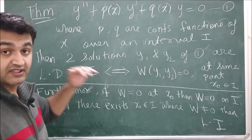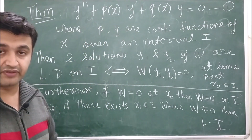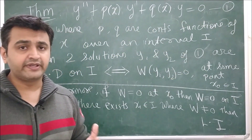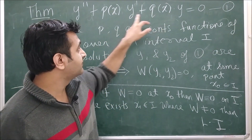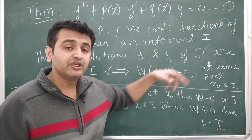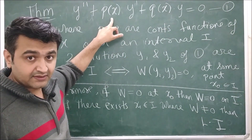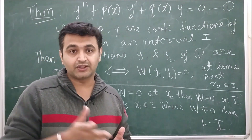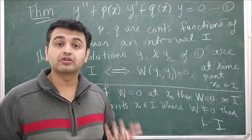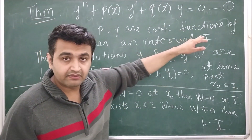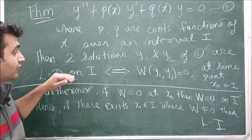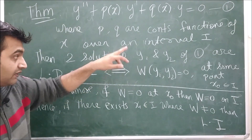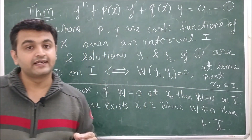The question of when the converse is true leads us to our important theorem. If you have a second-order linear homogeneous differential equation where p and q are continuous functions on some interval I, and y1, y2 are two solutions of that equation, then y1 and y2 are linearly dependent on I if and only if their Wronskian is zero at some point in I.